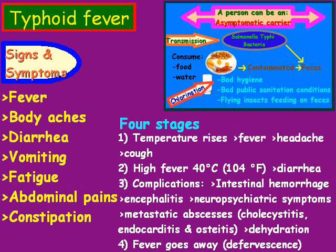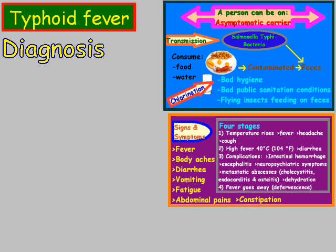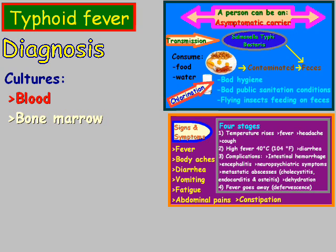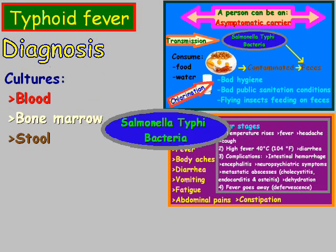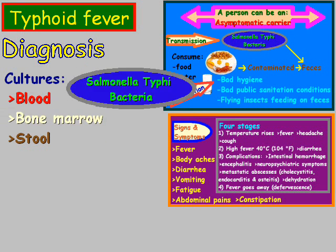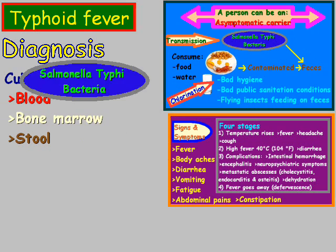Most patients survive typhoid fever; however, it can be fatal, so that's one thing to watch out for. As far as diagnosing typhoid fever, what is typically done is taking cultures of blood, bone marrow, or stool, and sending those to a lab where a microbiologist will test them for salmonella typhi bacteria.